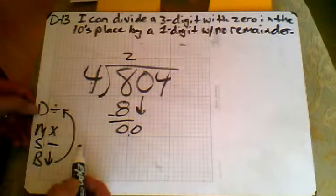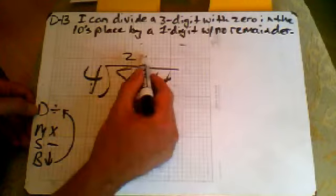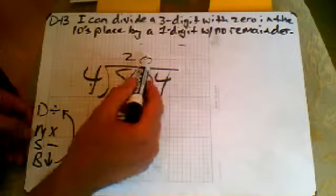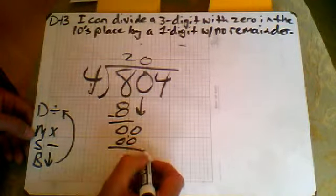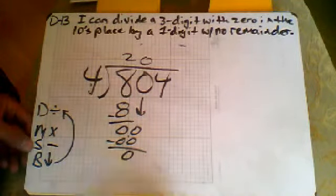Four goes into zero, back to the division. Four goes into zero, zero times. Multiply, zero times four is zero. Subtract, we have zero.